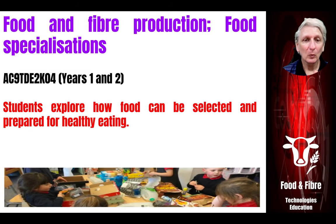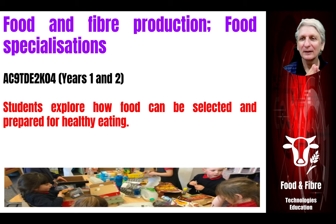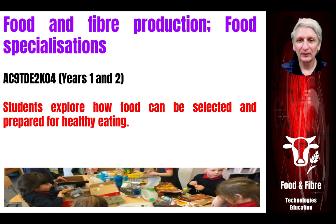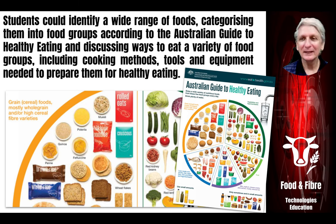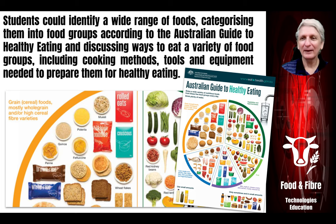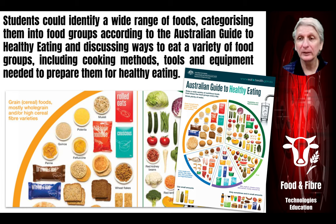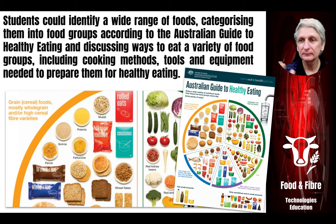In years one and two, we also look at how food can be selected and prepared for healthy eating — this relates to the food specialisation subcategory. Supporting and promoting healthy eating is a big part of the design and technology subject. Students should be able to identify healthy versus unhealthy foods. The Australian Guide to Healthy Eating is a resource used a lot in schools that helps identify not just what are healthy and unhealthy foods, but that we need a selection of foods from a range of food groups to maintain a healthy diet.